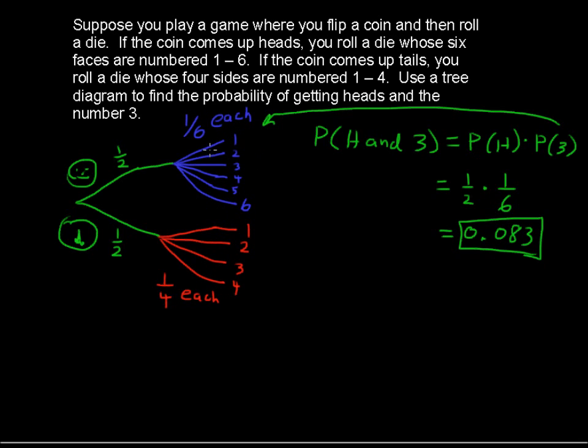often times these are called conditional probabilities, the second set of branches. When you want to find the final probability, you multiply along the entire branch. So what we did for the heads and 3, we multiplied the 1/2 and the 3. So just highlighting that.